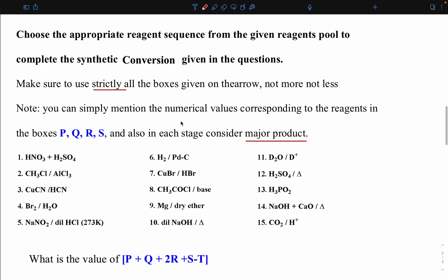This problem is from Black Book and in this problem we have mentioned some instructions like choose the appropriate reagent sequence from the given reagent pool. Here we have one pool from 1 to 15. From this pool you have to select the appropriate reagent sequence to complete the synthetic conversion given in the question.